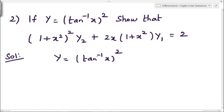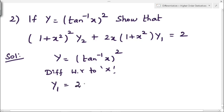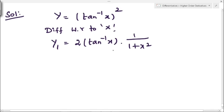Differentiating y = (tan⁻¹x)² with respect to x: y₁ = 2·tan⁻¹x·(1/(1 + x²)). Taking (1 + x²) to the left-hand side gives (1 + x²)·y₁ = 2·tan⁻¹x. Now we differentiate this equation again.